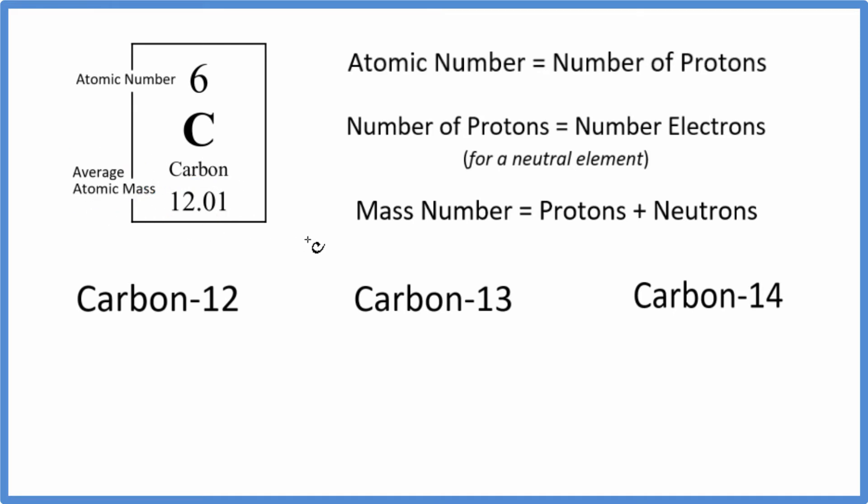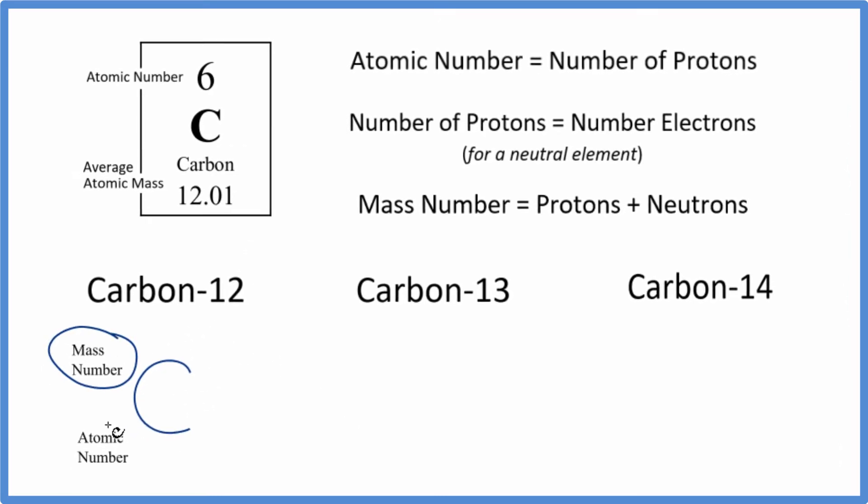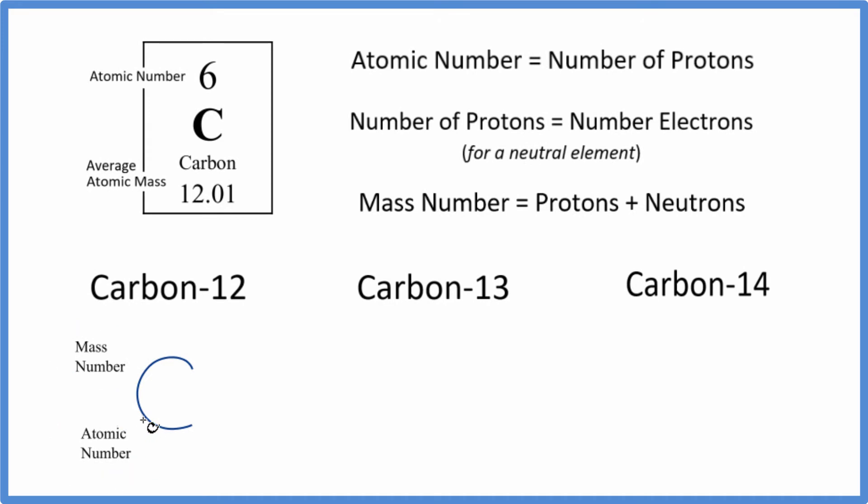To write the isotope notation, the nuclear notation, we'd write the element, that's carbon. And then we'd have the mass number here and the atomic number here. So the mass number, that's the 12. So let's put the 12 there.